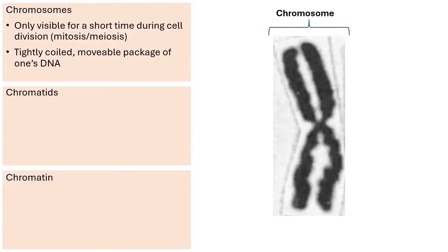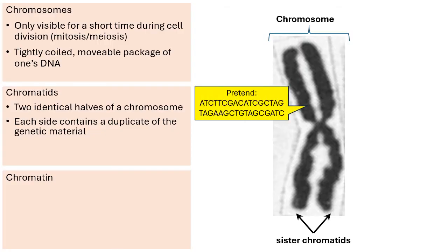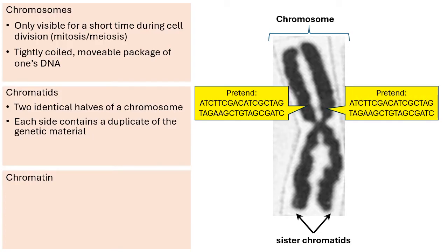The chromatids are the two identical halves of a chromosome. Sometimes you'll hear them called sister chromatids — the one on the left and the one on the right. They're identical. If you were to compare the A's and T's and C's and G's of the left chromatid with those of the right chromatid, the sequence should be identical. Each chromatid contains a duplicate copy of the genetic material, because when cells divide through mitosis, one cell becomes two, and each cell will receive one of the copies of the chromatids.